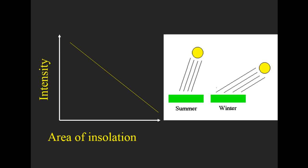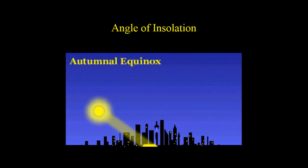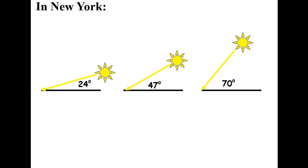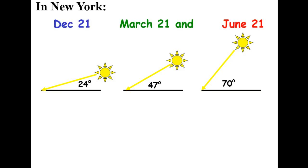So as area of insolation increases, the intensity decreases. That leaves us with New York. In New York, we have different angles of insolation, as we saw in the greater pictures when we were looking at the way the Earth was tilted.